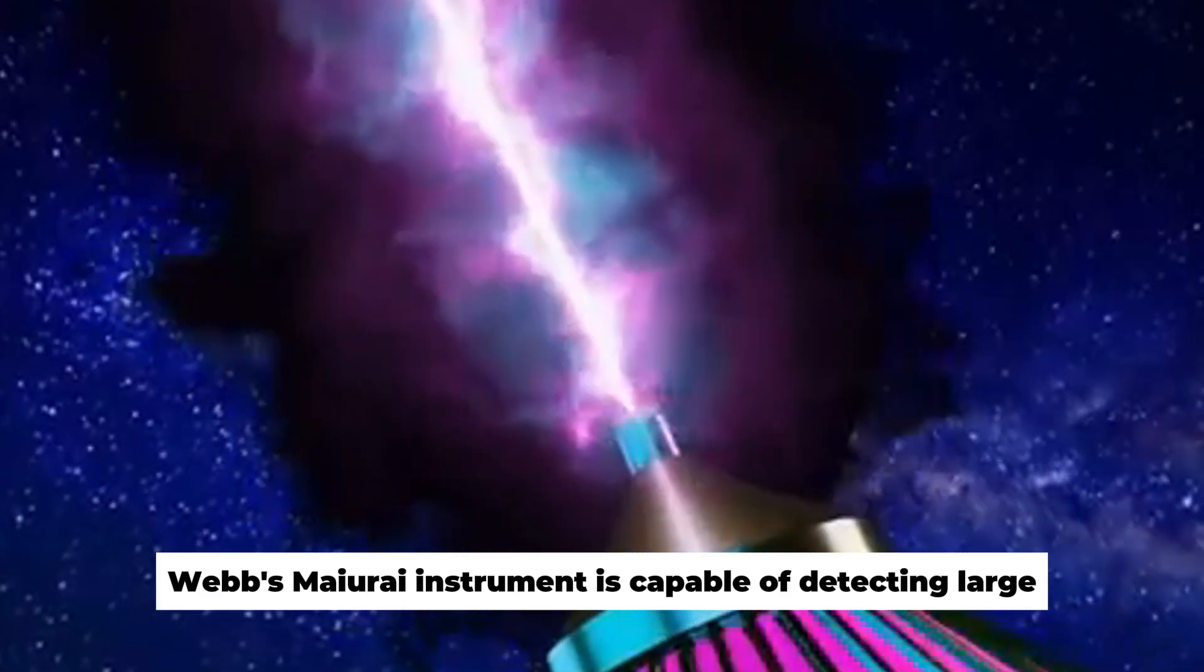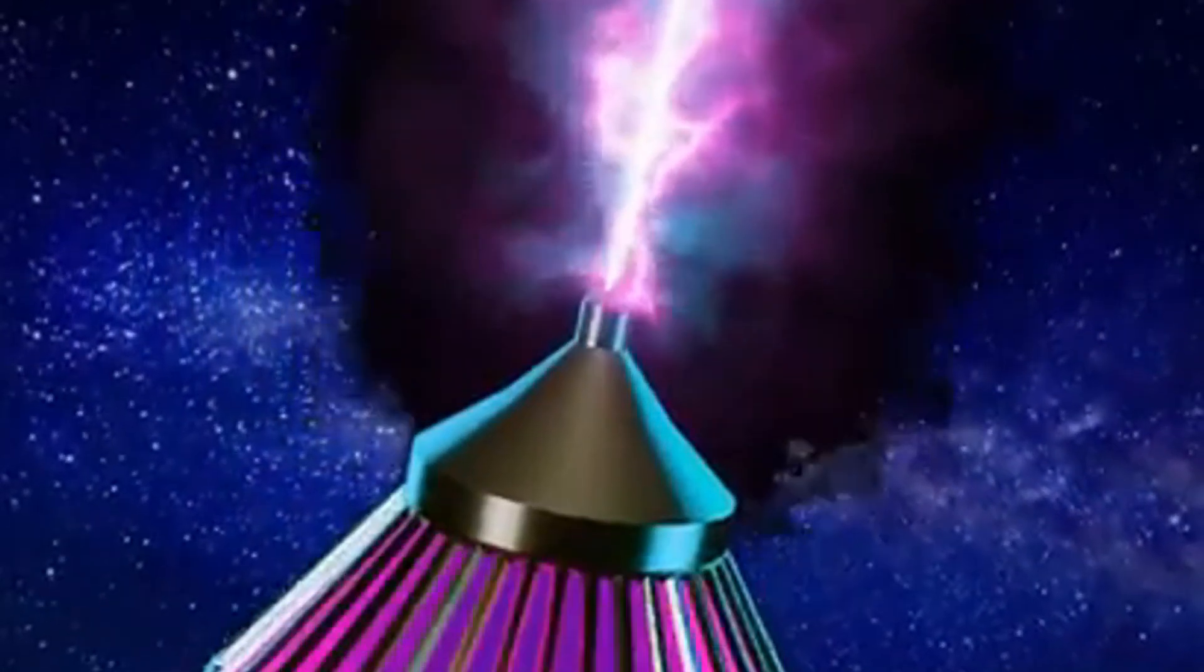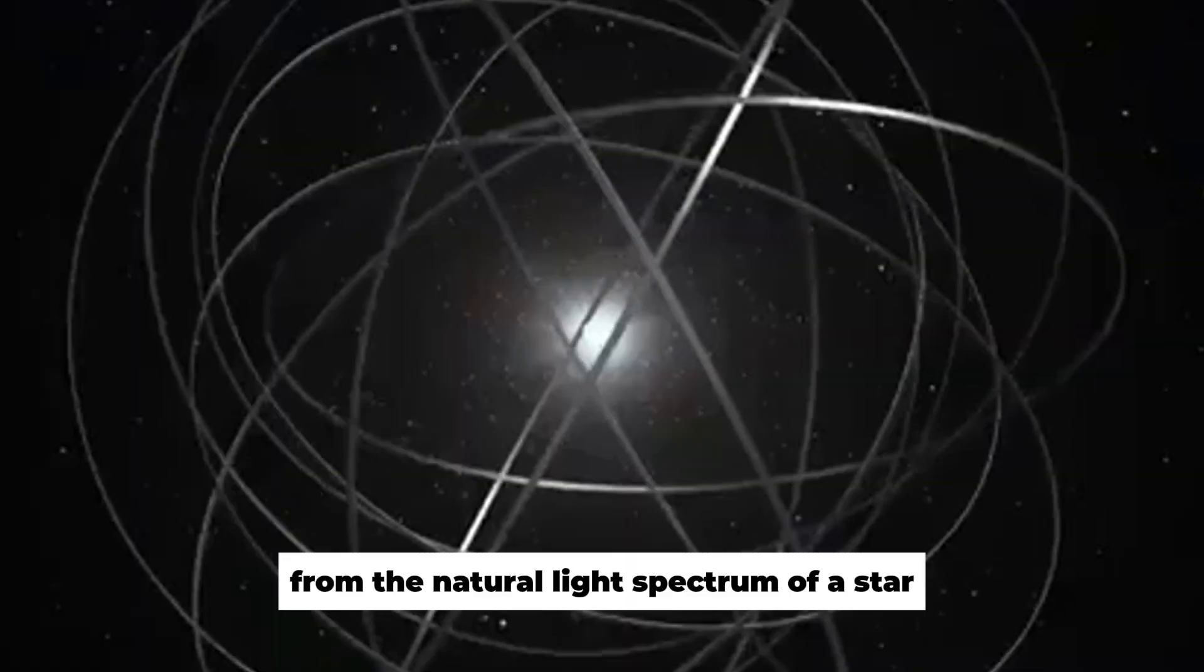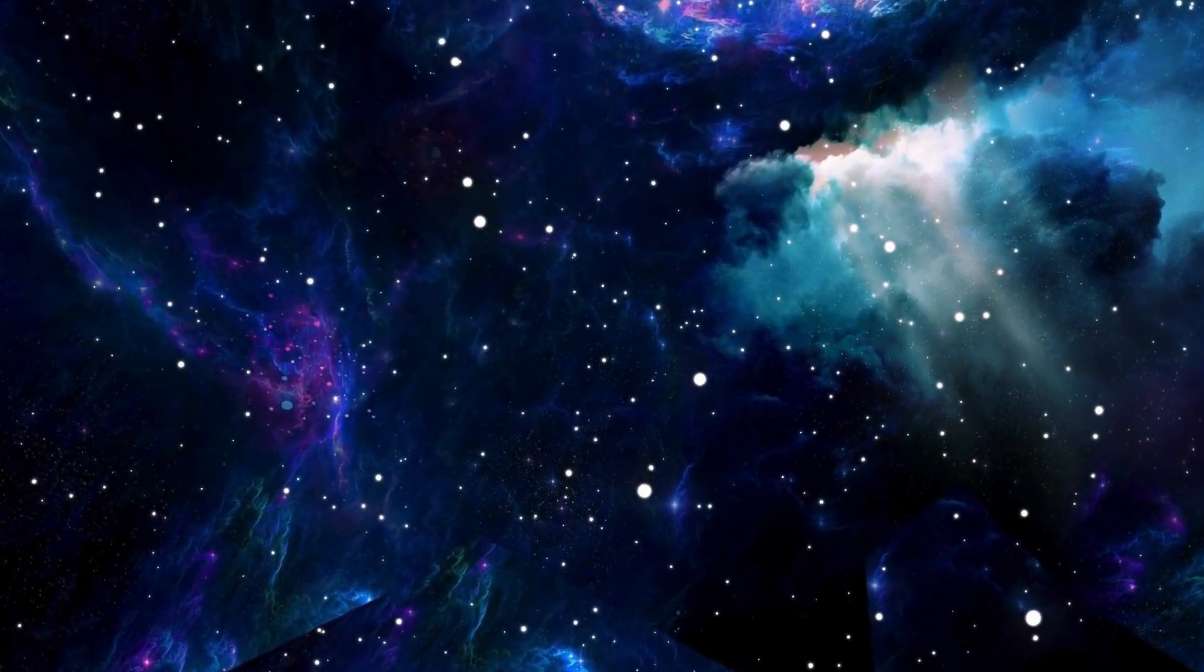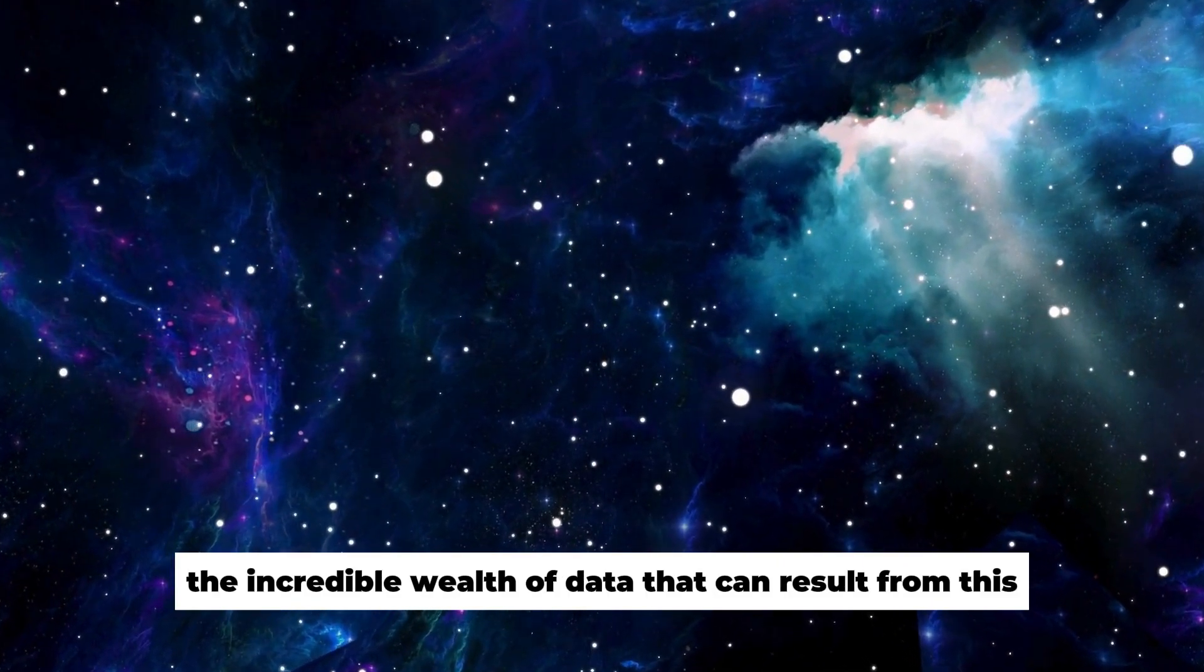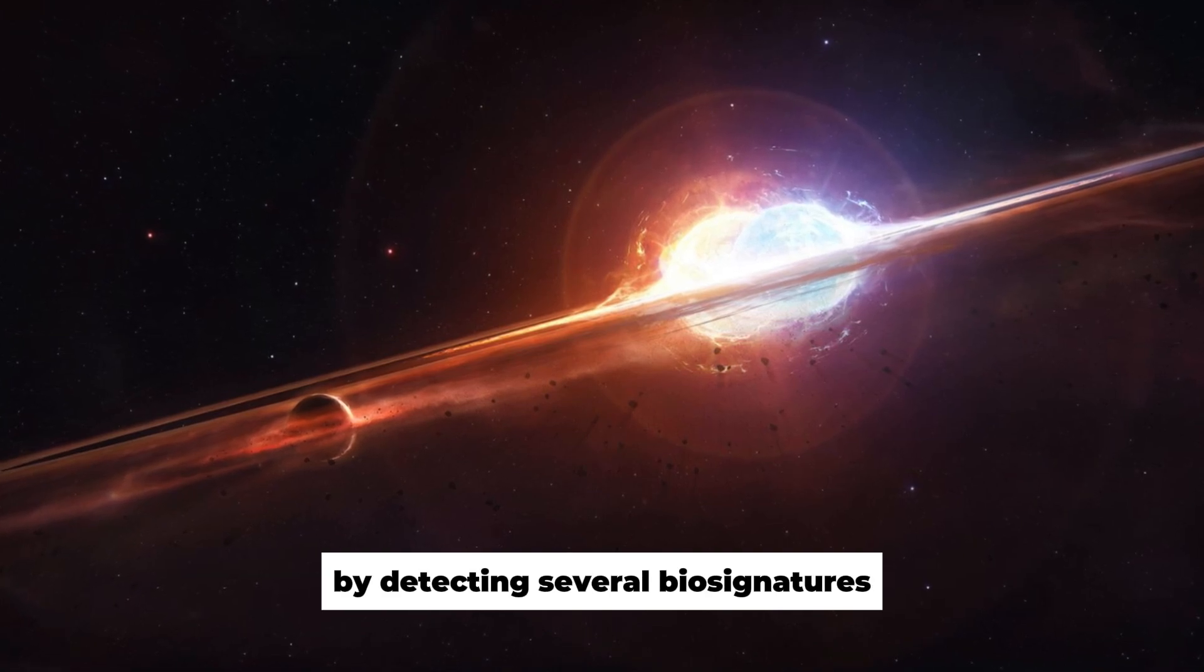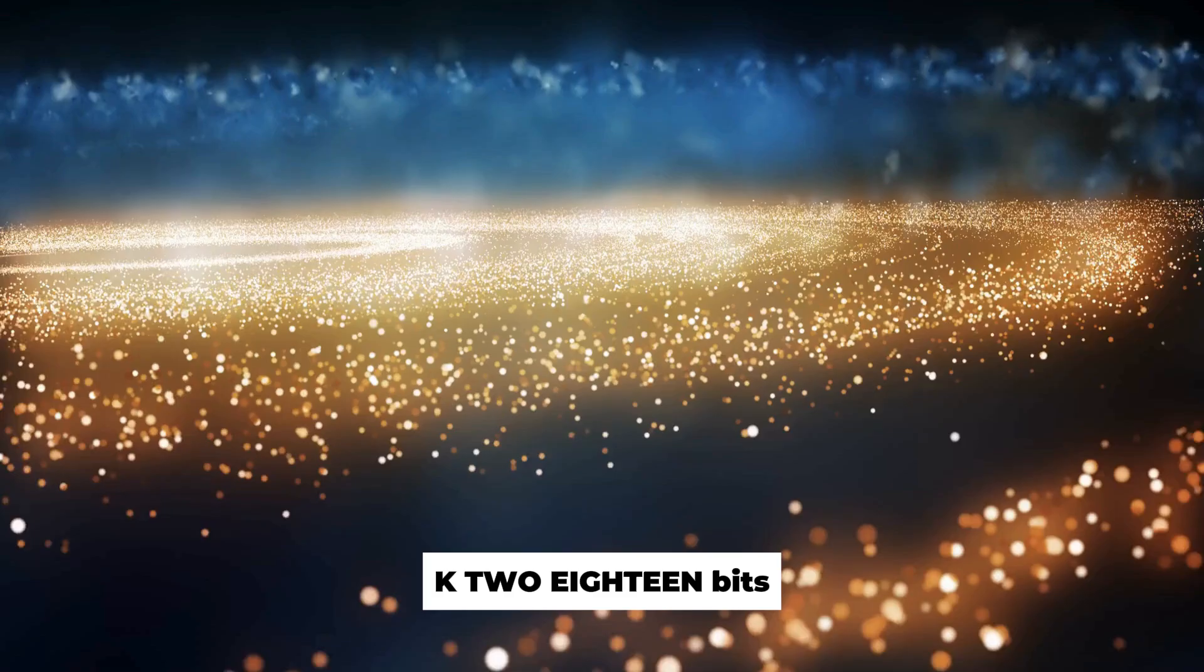Webb's MIRI instrument is capable of detecting large artificial light sources on exoplanets and would probably also be able to filter out artificially altered light from the natural light spectrum of a star due to Dyson spheres. The telescope has demonstrated the incredible wealth of data that can result from this by detecting several biosignatures in the vicinity of the exoplanet K2-18b.